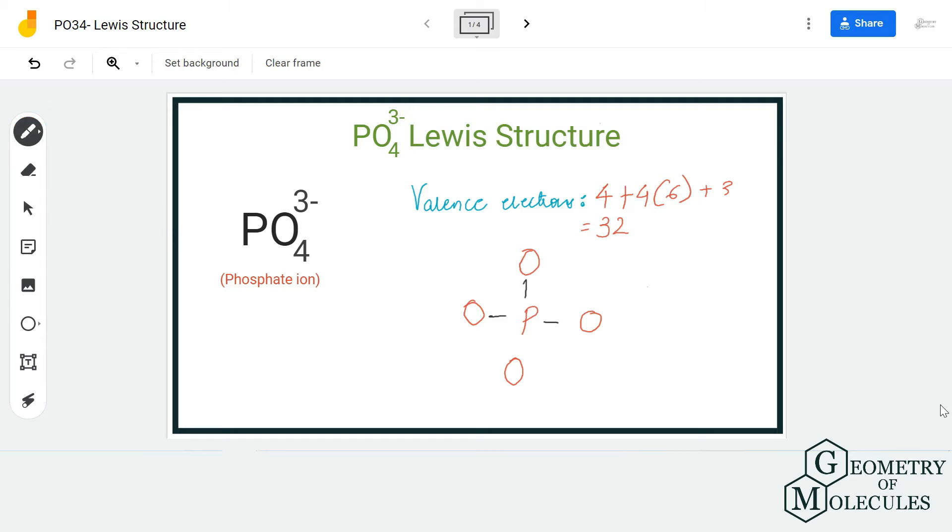Then arrange the remaining electrons around oxygen atoms. Here, each oxygen atom will have six valence electrons apart from these bonds, and we will complete the total of 32 valence electrons by drawing this structure.